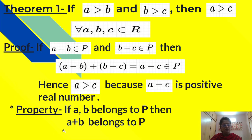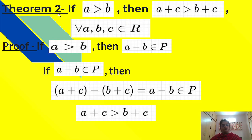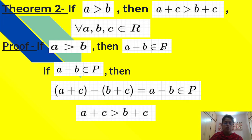Theorem 2: If a greater than b, then a plus c greater than b plus c, for every a, b belonging to R. Proof: Since a is greater than b, a minus b belongs to P. Now consider (a plus c) minus (b plus c), which equals a minus b. Since a minus b belongs to P, therefore a plus c is greater than b plus c.